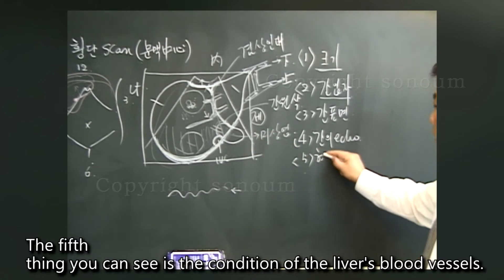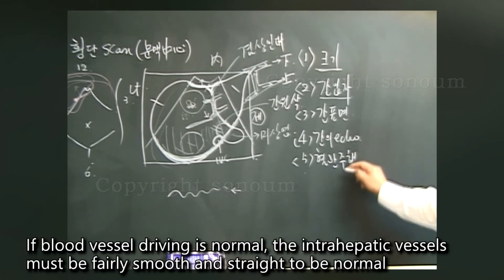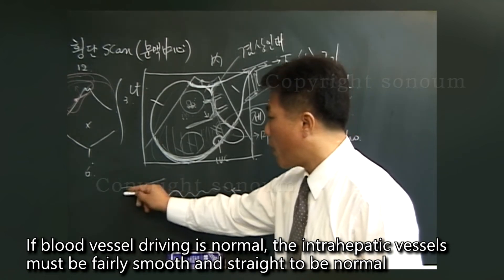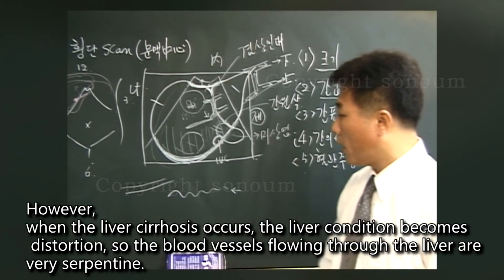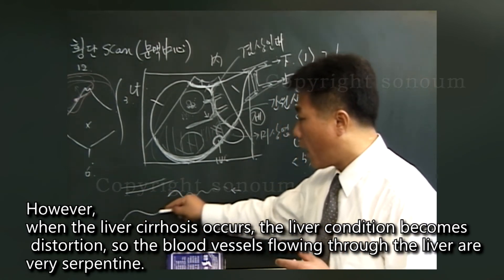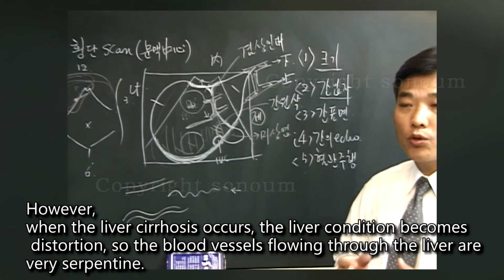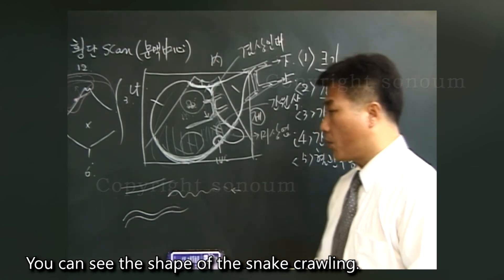The fifth thing you can see is the condition of the liver's blood vessels. If blood vessel driving is normal, the intrahepatic vessels must be fairly smooth and straight to be normal. However, when the liver cirrhosis occurs, the liver condition becomes distortion. So the blood vessels flowing through the liver are very serpentine. You can see the shape of the snake crawling.